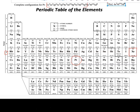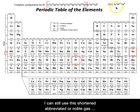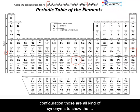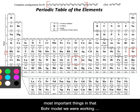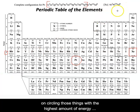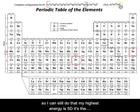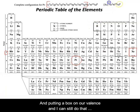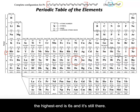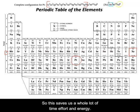I can still use this shortened, abbreviated, or noble gas configuration — those are all synonyms — to show the most important things. In that Bohr model we were working on, circling things with the highest amount of energy: my highest energy is 5d, it's the last thing I wrote. And putting a box on our valence: the highest n is 6s, and it's still there. So this saves us a whole lot of time, effort, and energy.